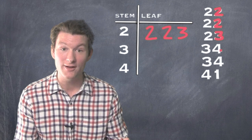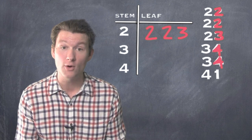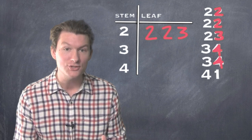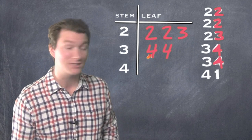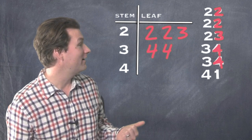Let's make the leaves for the 30s. We've got 34 and 34. What are the two ones digits there? It's 4 and 4. So that's what you'd write next to the 3. The 34 and 34.